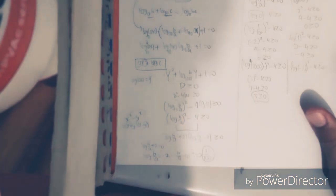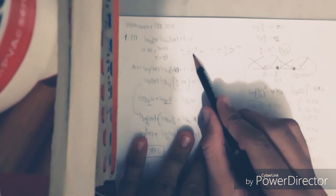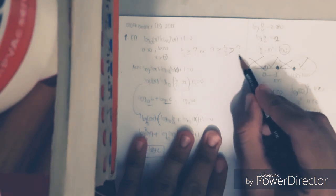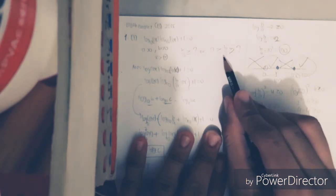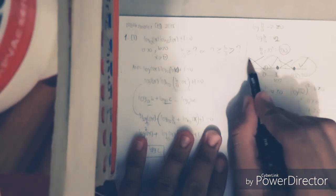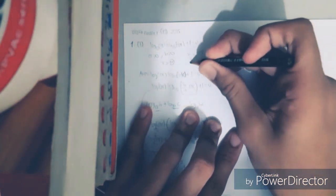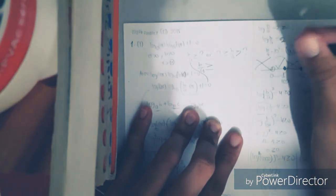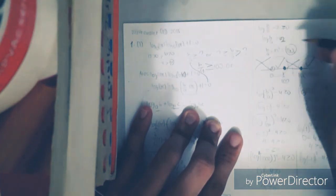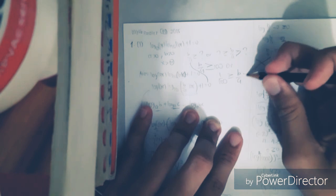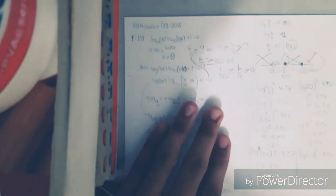Looking back at the original question, the final answer is: b/a ≥ 100, or 0 < b/a ≤ 1/100. This is the solution for number one. The next video will cover number two of section one.